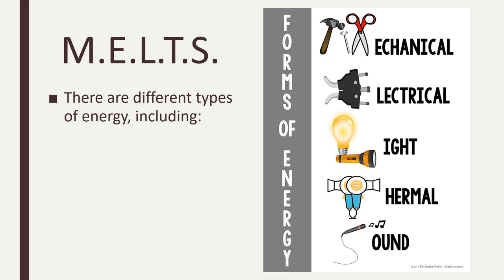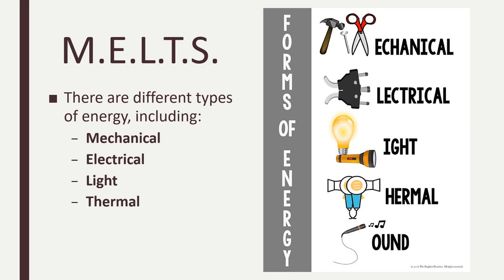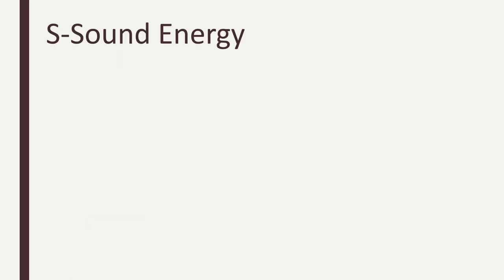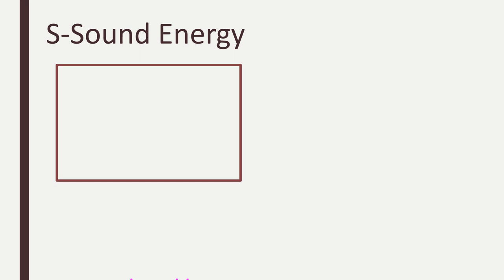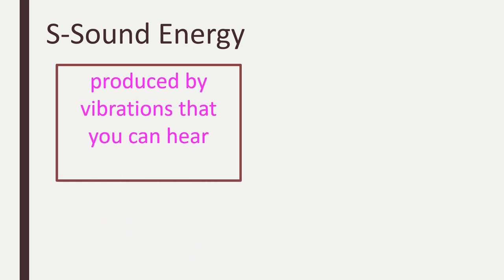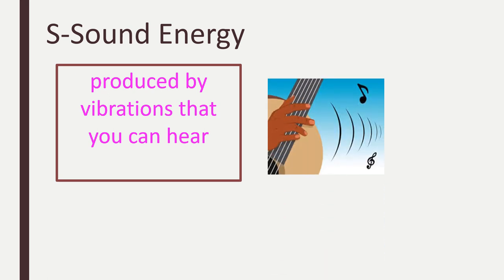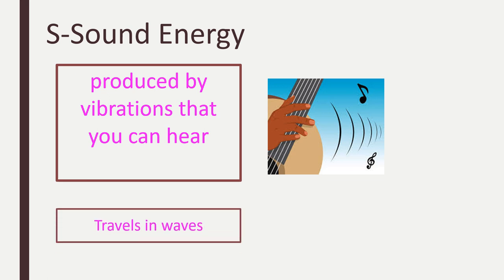There are different types of energy including mechanical, electrical, light, thermal, and sound energy. Yesterday we learned about sound energy. Remember that sound energy is energy produced by vibrations that you can hear. Vibrations can travel through air, water, liquids, or solids. Sound energy requires a medium in order to travel and travels in waves.